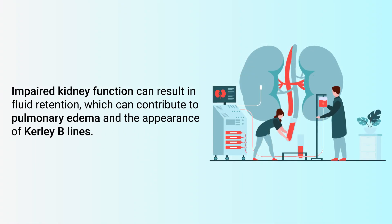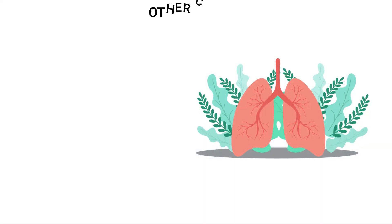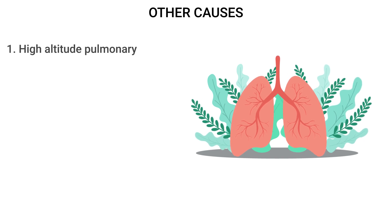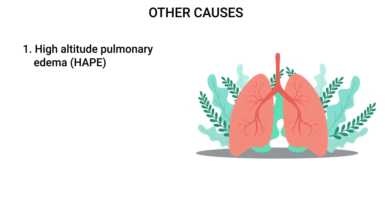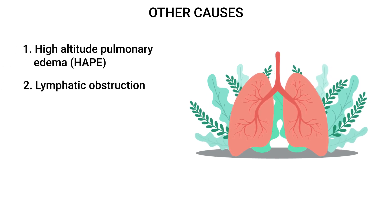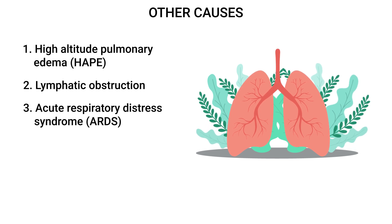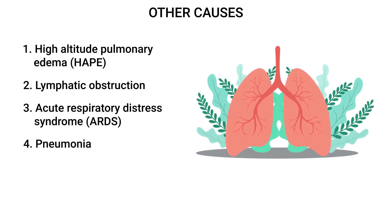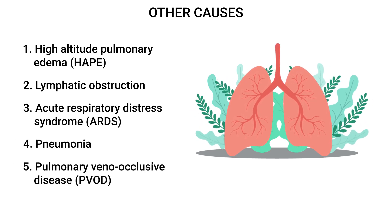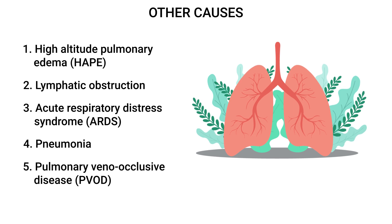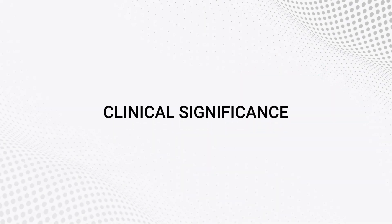Another cause is kidney failure, because impaired kidney function can result in fluid retention, which can contribute to pulmonary edema and the appearance of Kerley B lines. Some other potential causes include high altitude pulmonary edema, lymphatic obstruction, ARDS, pneumonia, and pulmonary veno-occlusive disease.